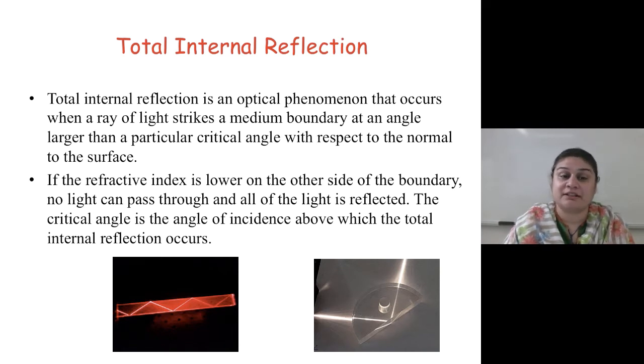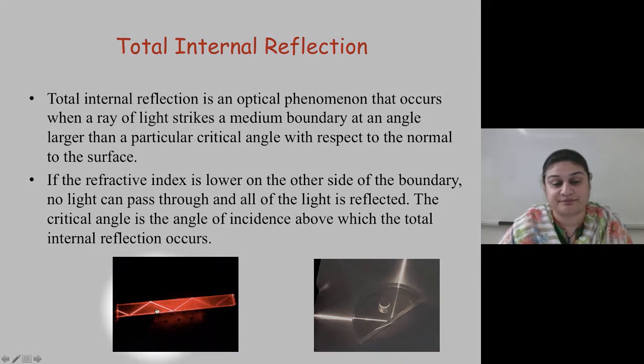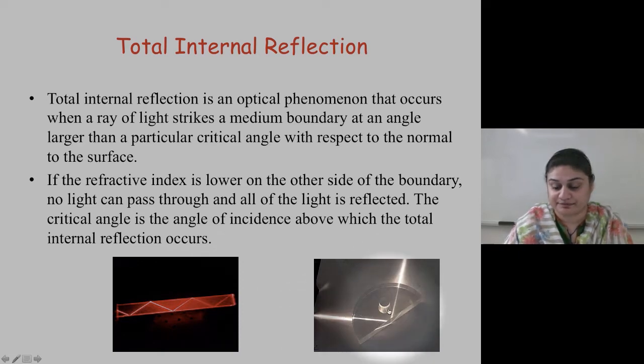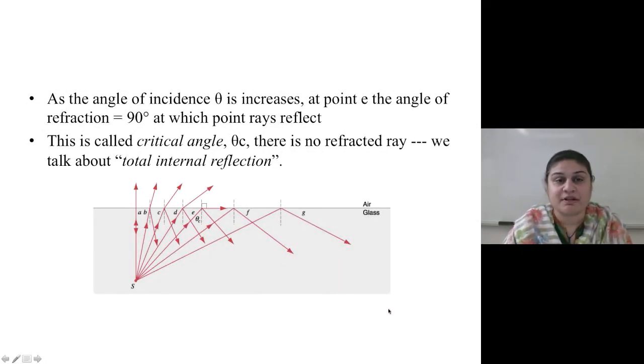The critical angle is the angle of incidence above which total internal reflection occurs. As the angle of incidence increases, at a point the angle of reflection equals 90 degrees at which parallel rays reflect. This is the critical angle, theta c.